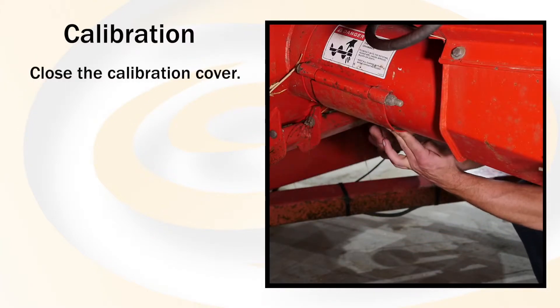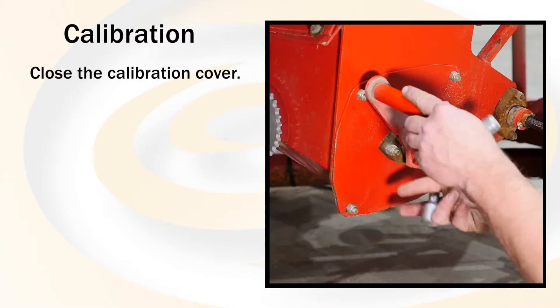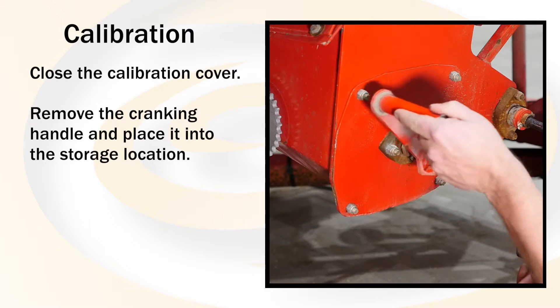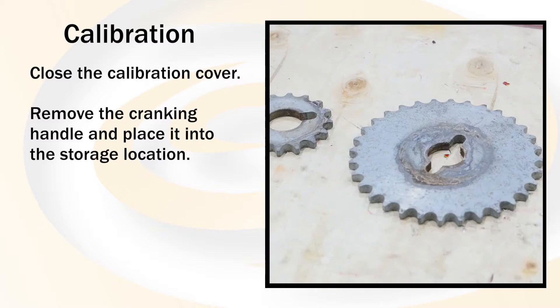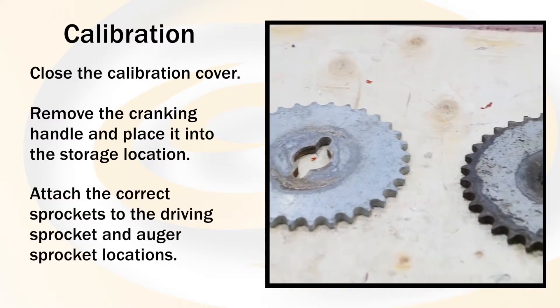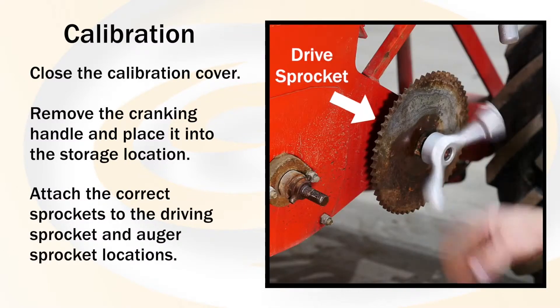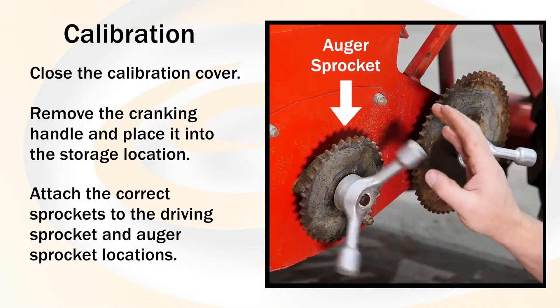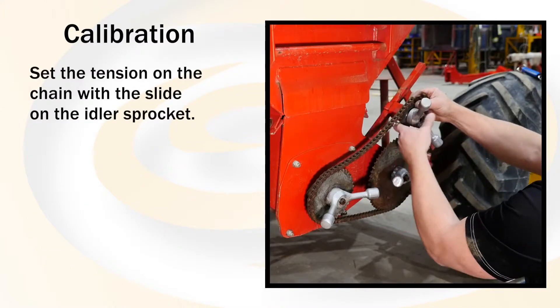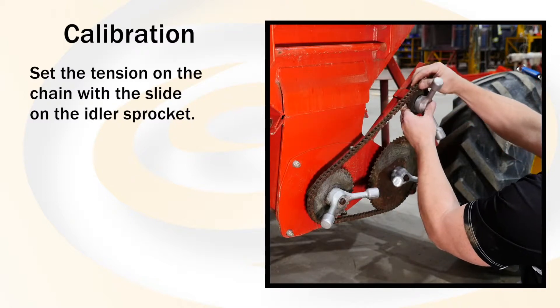Close the calibration cover and remove the cranking handle and place it into the storage location. Attach the correct sprockets to the driving sprocket and auger sprocket locations. Then set the tension on the chain with the slide on the idler sprocket.